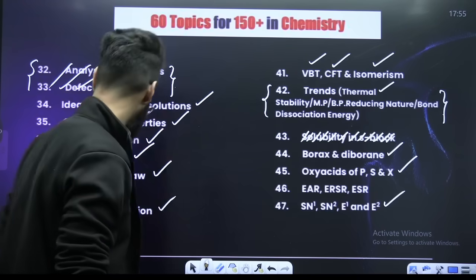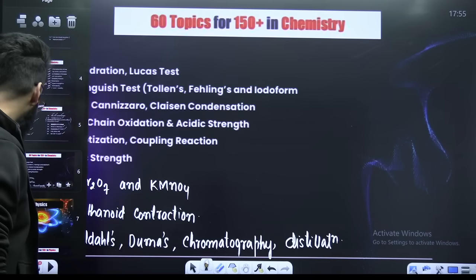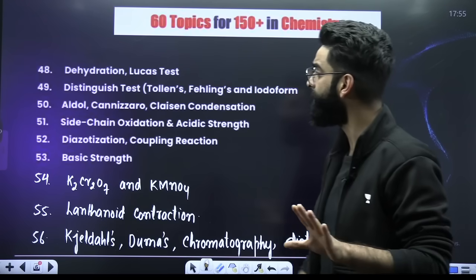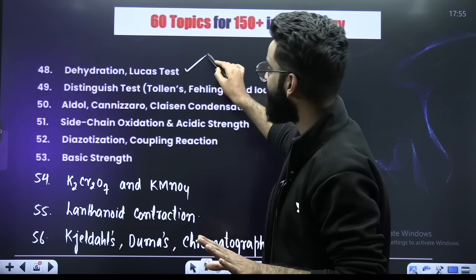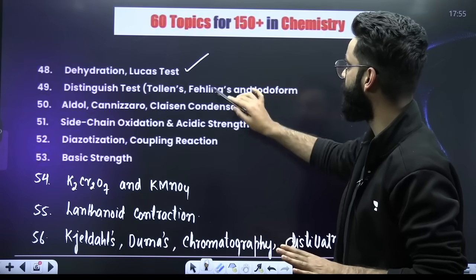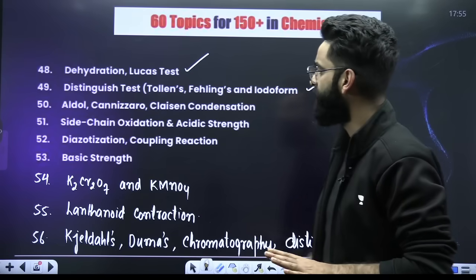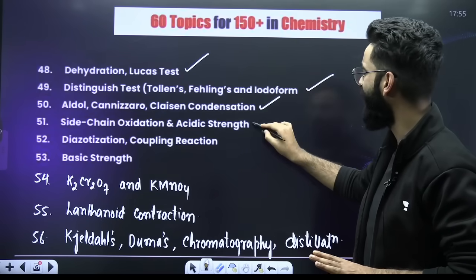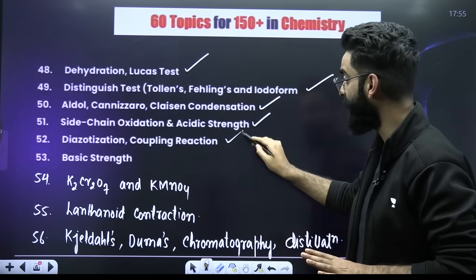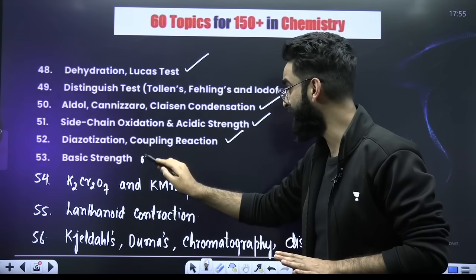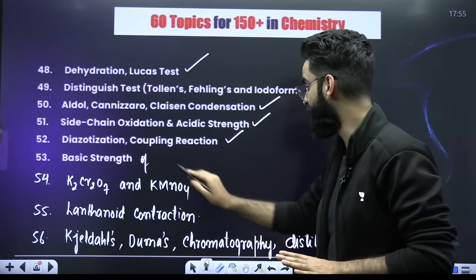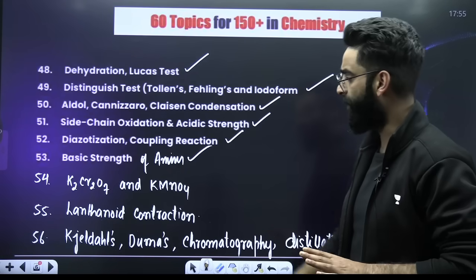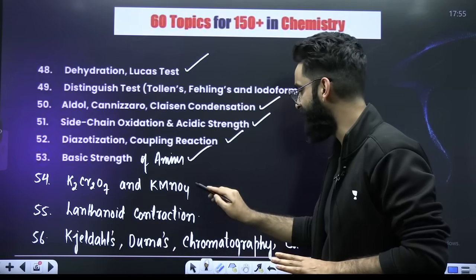Apart from reactions, there are a few more to note: dehydration, Lucas test, distinguishing tests involving Tollens', Fehling's and Iodoform. You have got Aldol, Cannizzaro, Claisen condensation, side-chain oxidation and acidic strengths, diazotization coupling reaction, and basic strength of amines. From NMF, you can consult K2Cr2O7 and KMnO4, and Lassaigne's test.